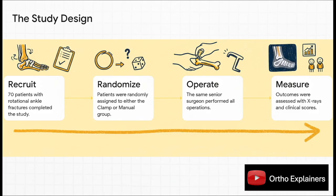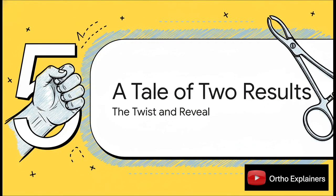Afterwards, they measured everything. They used x-rays to check the anatomical alignment. But just as important, they actually asked the patients how they felt and how their ankle was working. And this, my friends, is where our story takes a really fascinating twist. Because the results from the x-rays, they told one story. But the results from the patients, they told a completely different one.